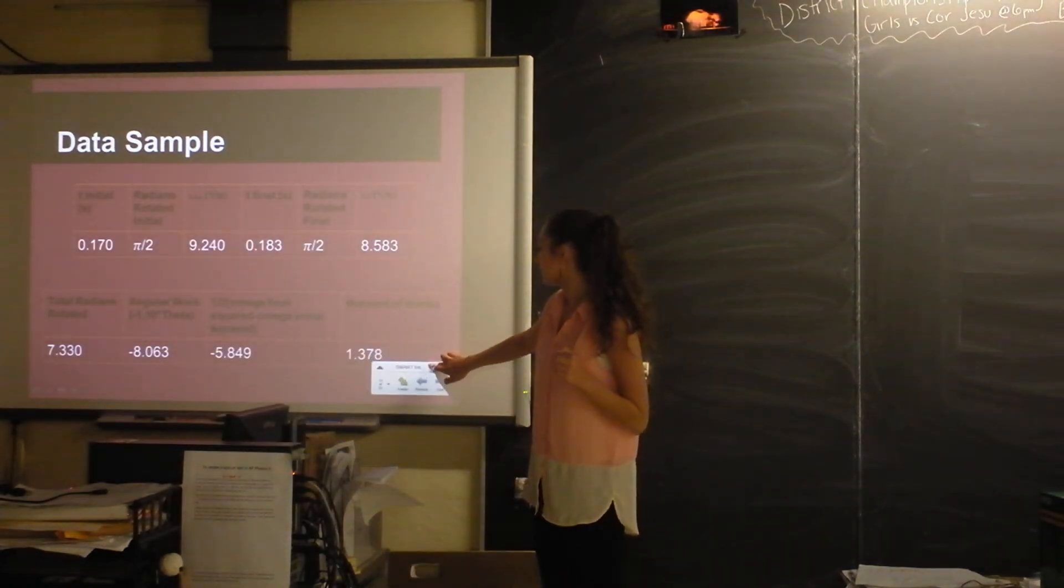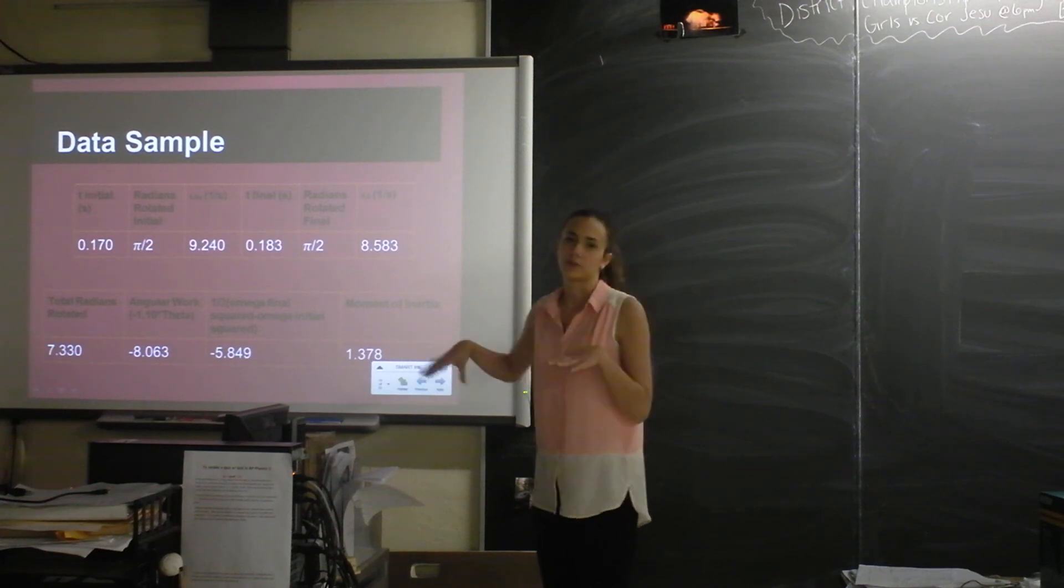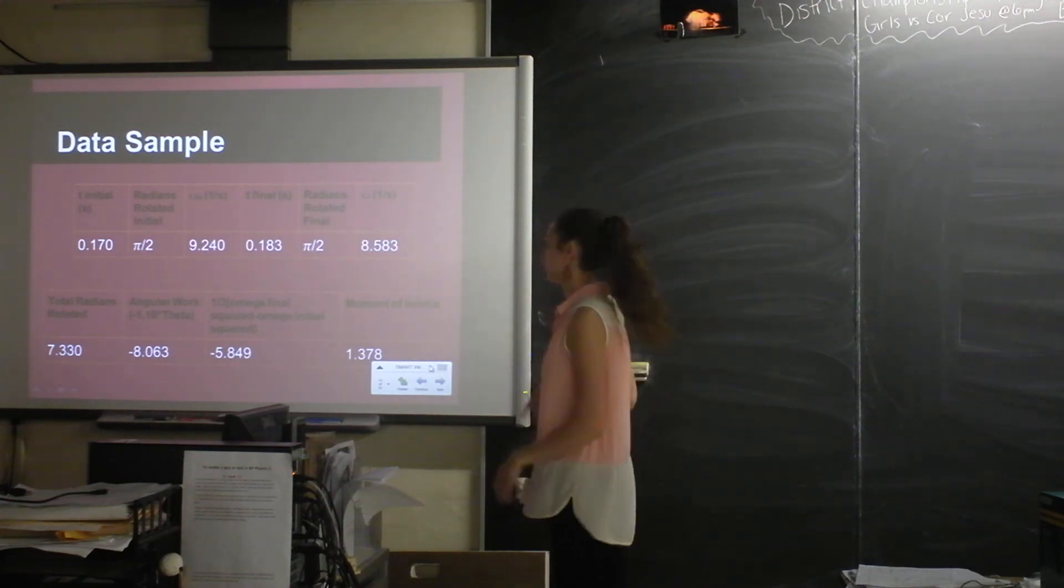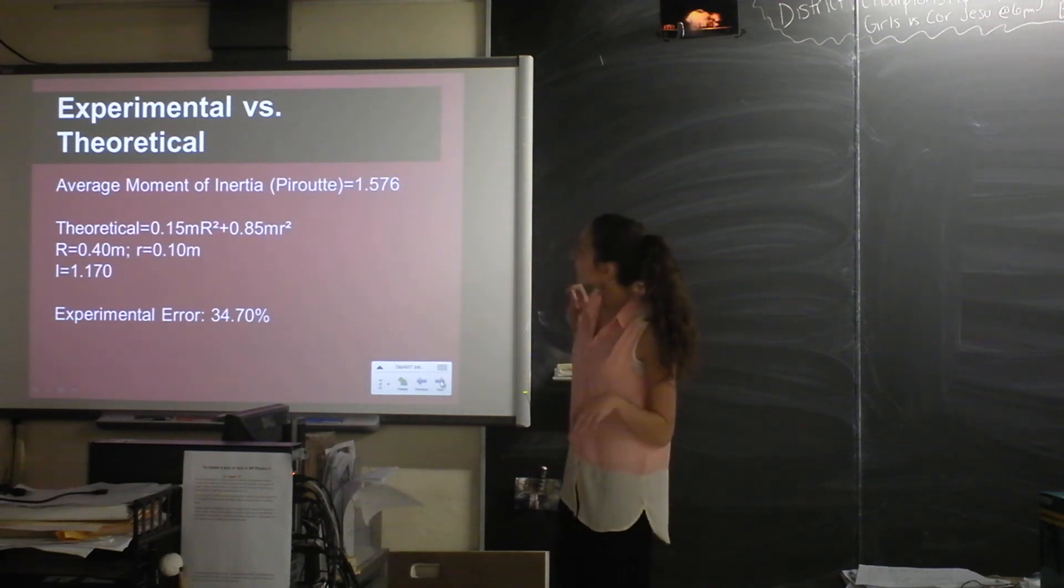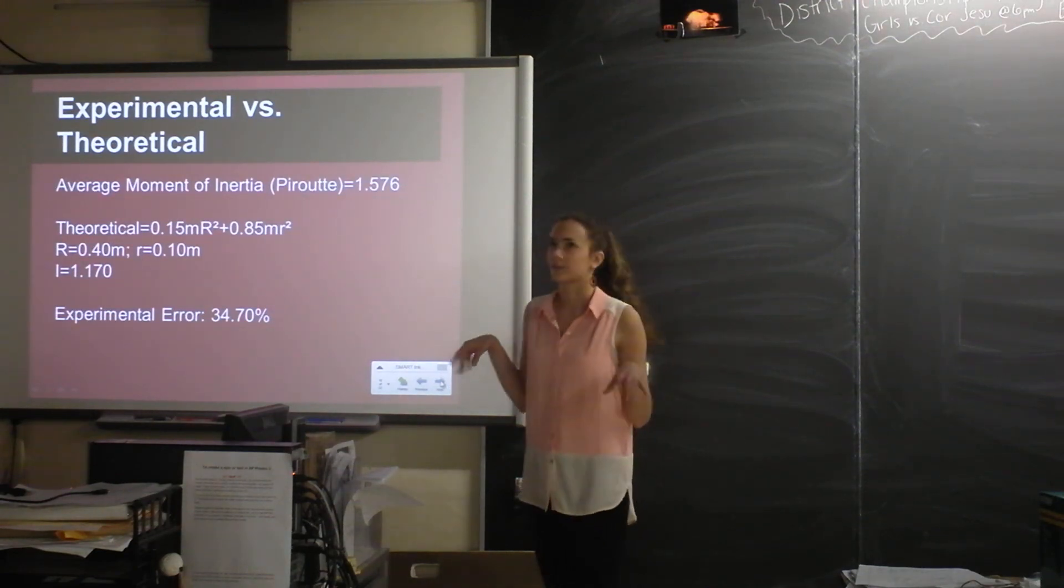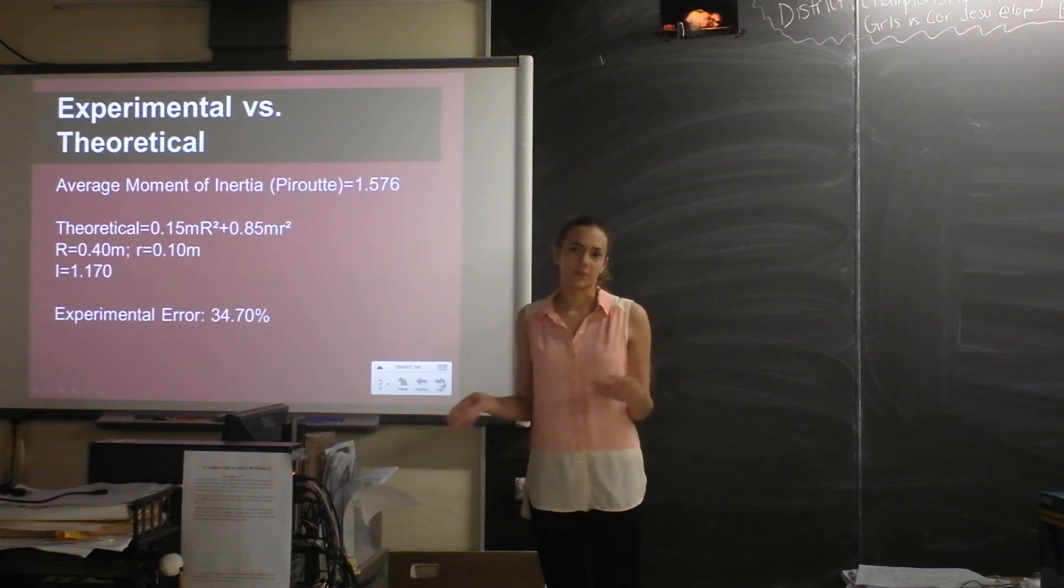So using the equation I derived in the beginning and plugging in all of those values, I got her moment of inertia to be 1.378. And this was just for a given turn. So I did this for a bunch of different pirouettes that she did. And then on average her moment of inertia was about 1.576 kilograms times meters squared. And then I calculated the theoretical moment of inertia based on body mass distribution and distance of her leg from the axis of rotation. And I got experimental error of about 35%, which compared to the moment of inertia lab that we did in the beginning of the year, I thought that was pretty accurate.